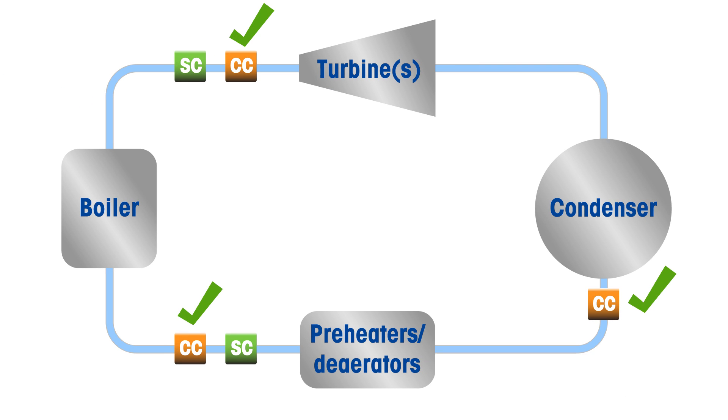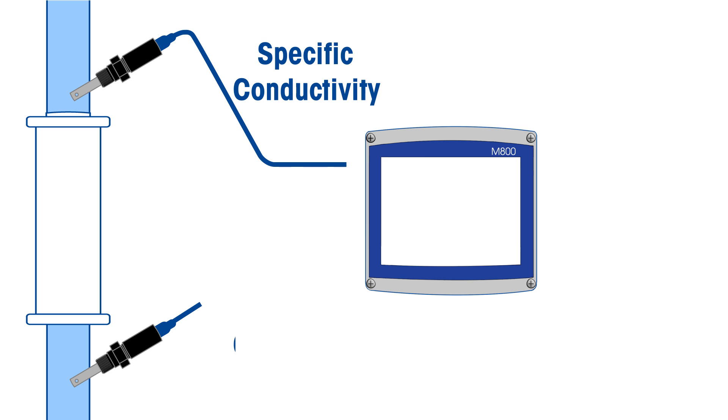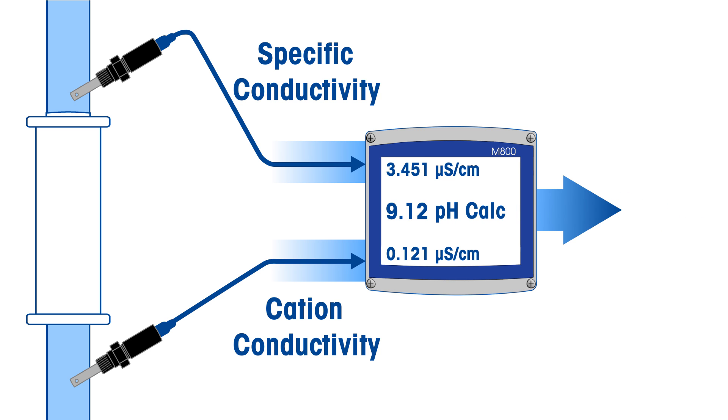However, correction for minor contaminants by measuring the cation conductivity of the sample is needed to provide accurate results. The specific and cation conductivity values are used in an industry-accepted calculation that provides the highest accurate conversion to pH.